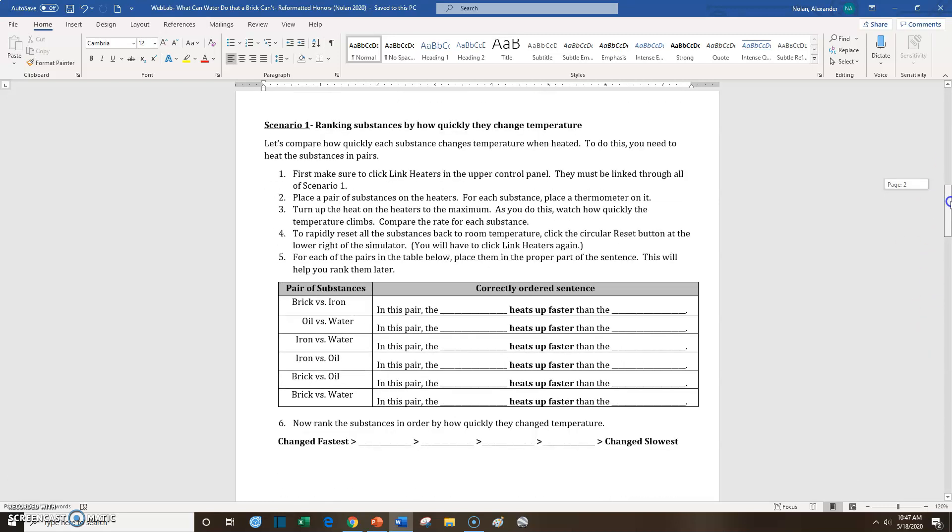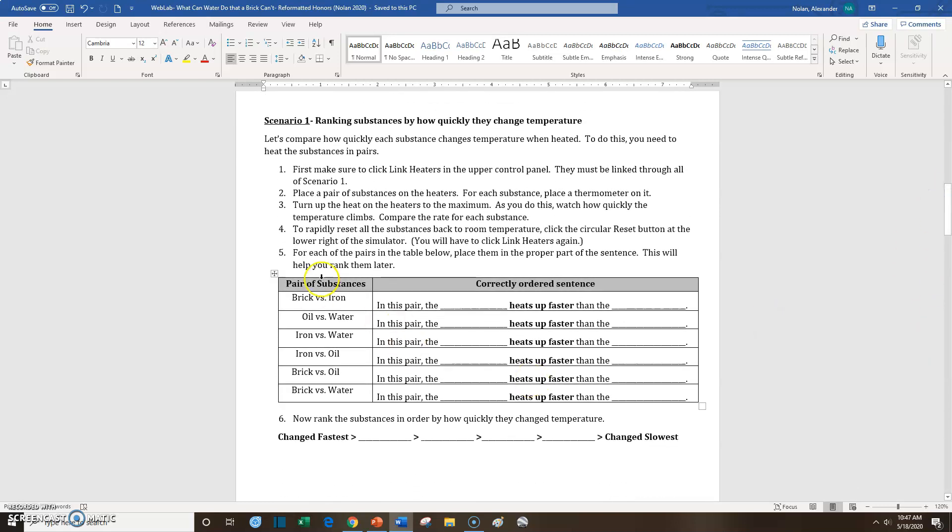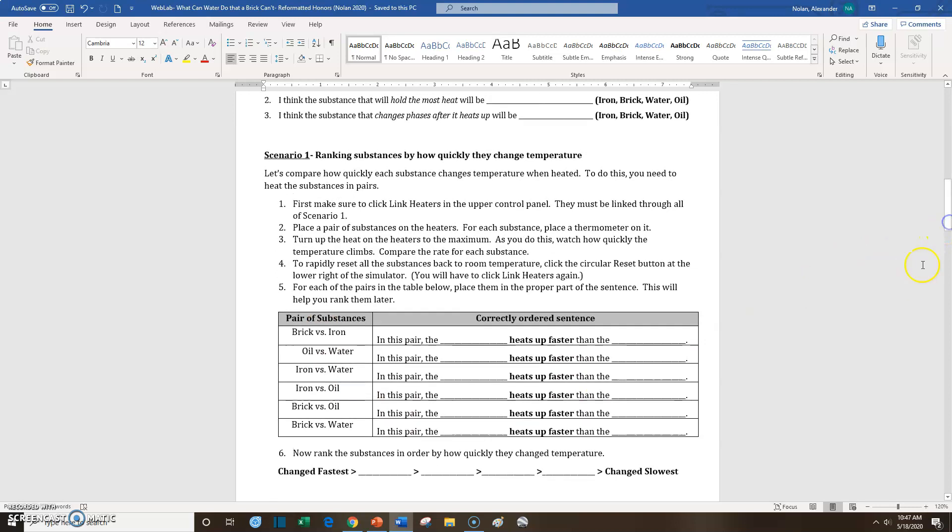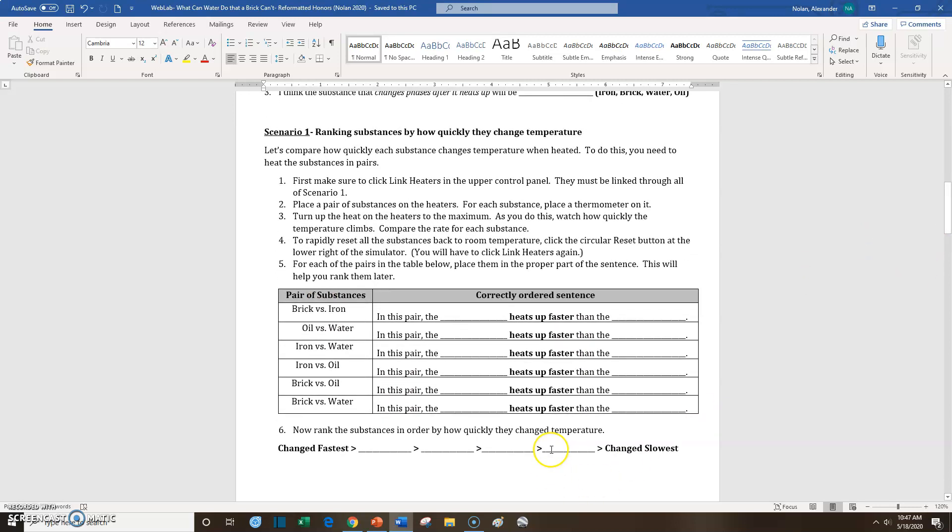So let's start off with scenario one. I'm not going to go through and do every single one of these scenarios, but I'll at least show you a few so that we kind of know how this works. The first thing that we need to do is to first just rank substances by how quickly they change temperature. Now, unfortunately, in the simulator, you can only watch the substances two at a time, but we have four. So we're sort of going to have to look at them in a few different combinations to rank them and figure out which one changes temperature the fastest and which one changes temperature the slowest.